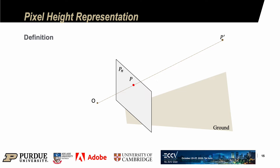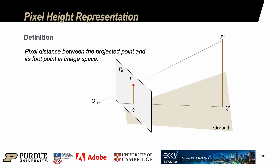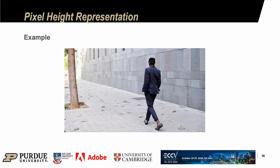Let's first talk about the pixel height representation. For a given point p prime, it has a foot point relative to the ground plane. After projection, the 3D line p prime q prime will be projected to be the line p q on the image plane. The pixel distance between p and q is the pixel height for p prime. Here is a real-world example: point a3 has pixel height distance a3b3, point a1 has pixel height distance a1b1, and point a2 has pixel height distance a2b2.